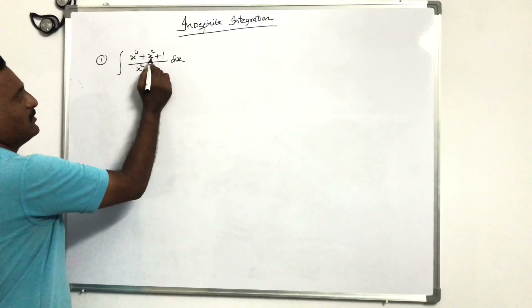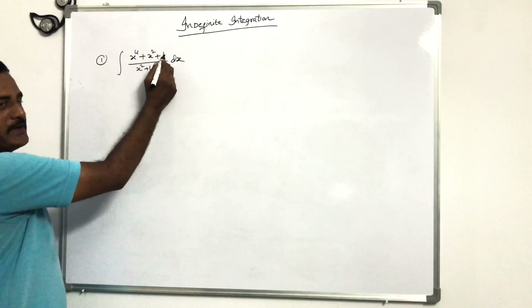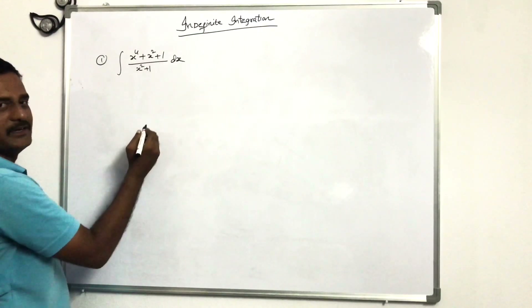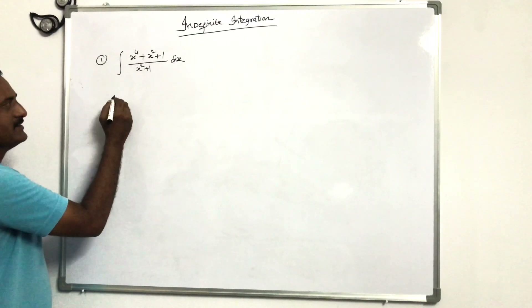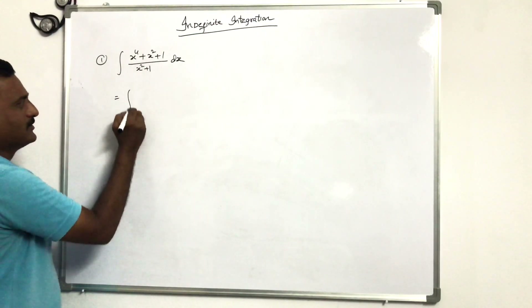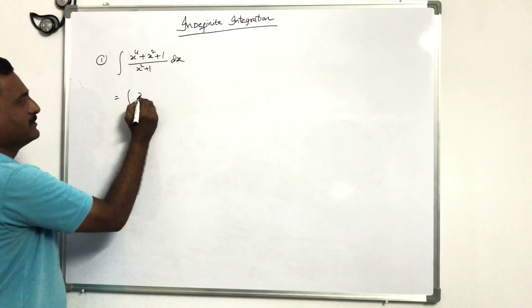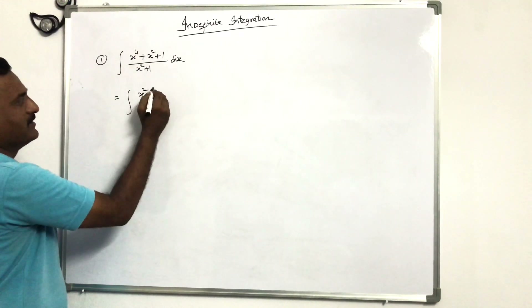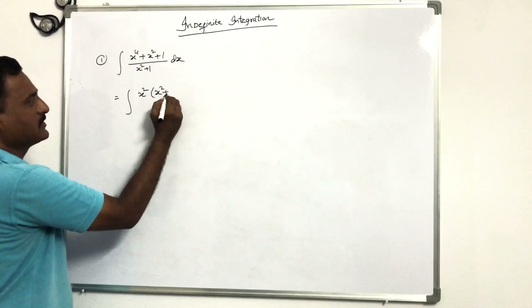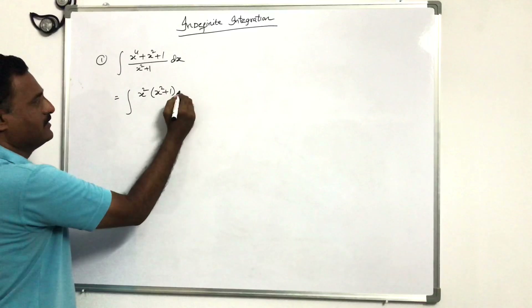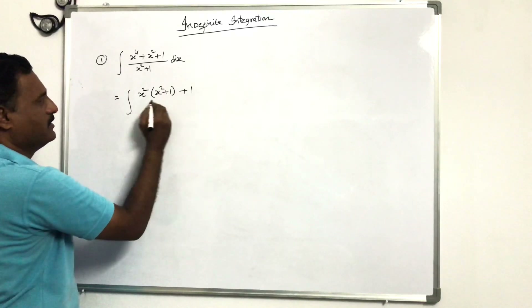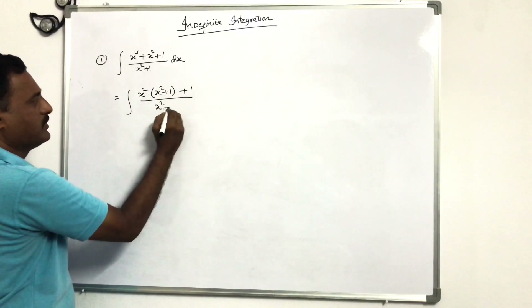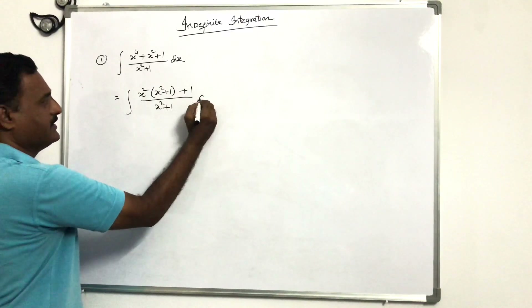Integration of (x⁴ + x² + 1) / (x² + 1) dx. This is equal to integration of x² common: x² into (x² + 1) plus 1, all divided by (x² + 1) dx.